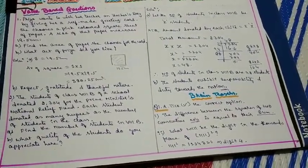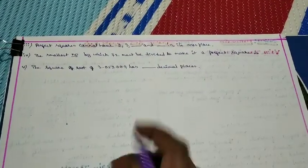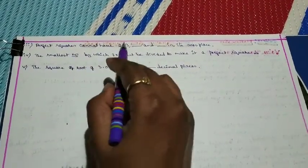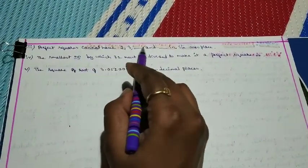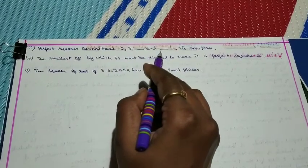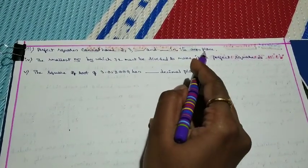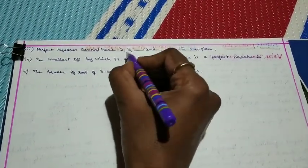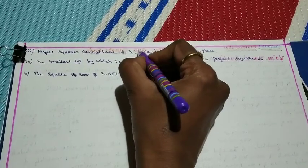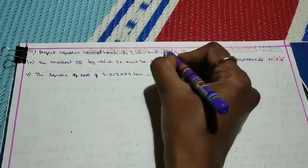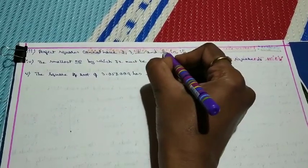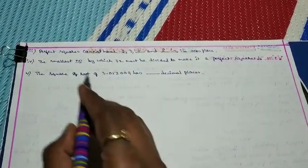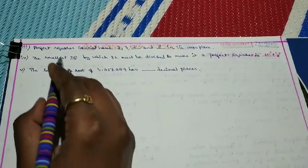Question 3: Perfect squares cannot have 2, 3, dash and dash in its ones digit. According to the facts, the answers are 7 and 8. If a number ends with 2, 3, 7, or 8 in the ones place, it is not a perfect square.